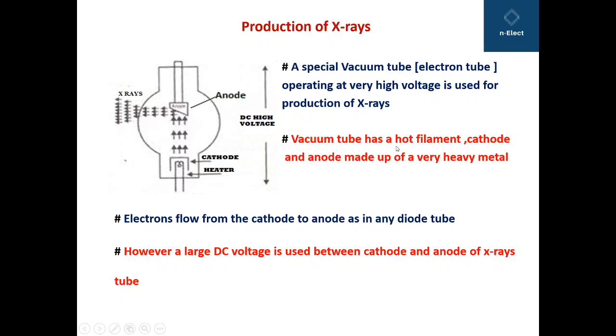The vacuum tube has a hot filament as you can see here, cathode and anode made up of very heavy metal. Electrons flow from the cathode to anode as in any diode tube. However, a large DC voltage is used between cathode and anode of the X-ray tube.